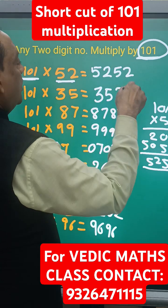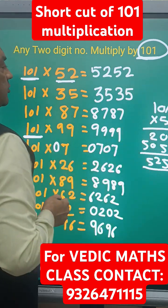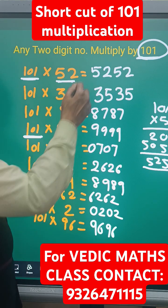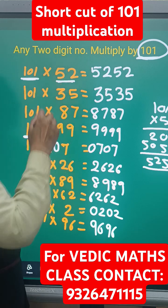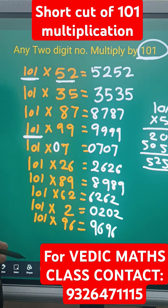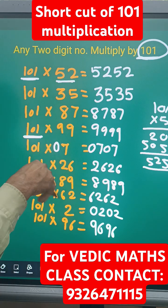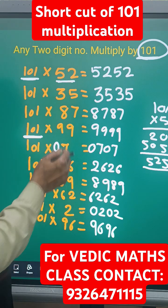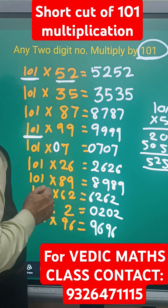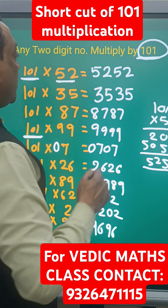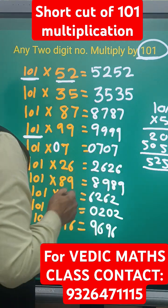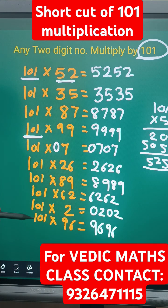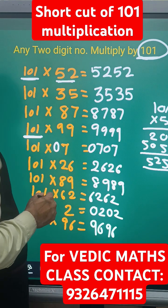In the next video, we will see 101 multiplied by any three-digit number or more. This same rule is applicable for more than two digits as well, but with a little extra rule involved.